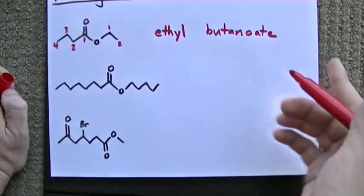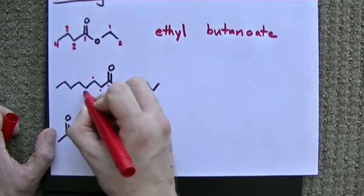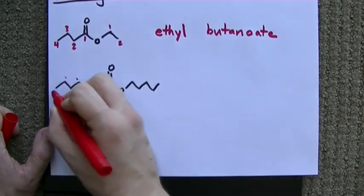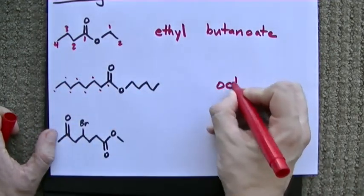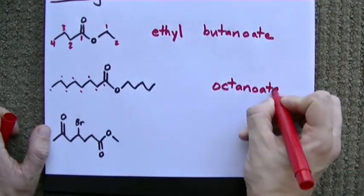Try it again with me, please. Here's my double bonded oxygen. 1, 2, 3, 4, 5, 6, 7, 8 carbons. And they're all single bonded together. We'll call it octanoate.